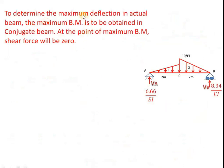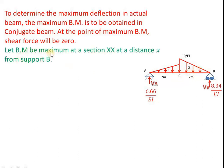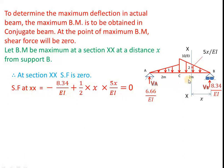Next, we are asked to calculate the maximum deflection. If the loading were symmetric, maximum deflection occurs at the center, but here the loading is unsymmetric. So we don't know exactly where it will be maximum. Therefore, we assume: let the bending moment be maximum at a section at a distance x from support B. Where bending moment is maximum, shear force will be zero. So let bending moment be maximum at this section — therefore the shear force at x will be zero.